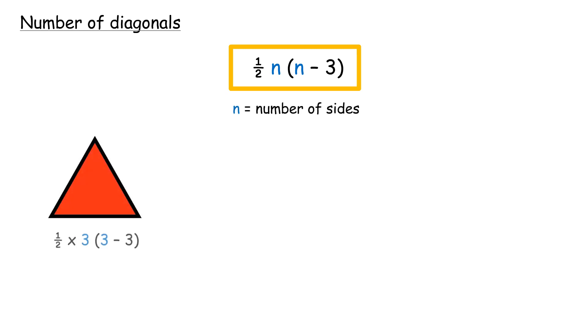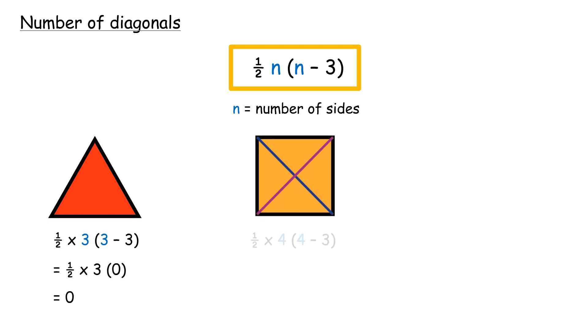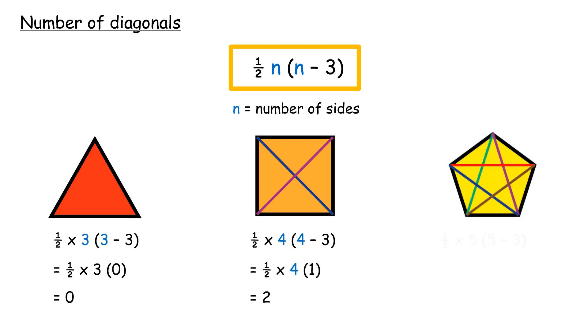The number of diagonals for a triangle is 0, for a quadrilateral is 2, and for a pentagon is 5.